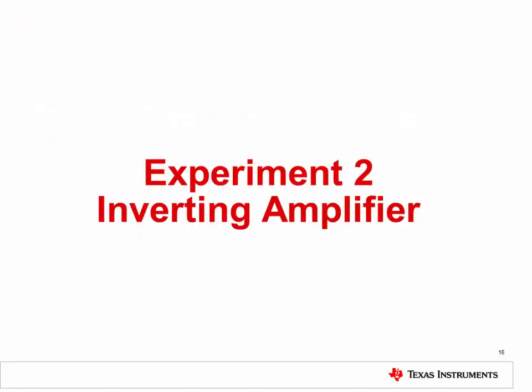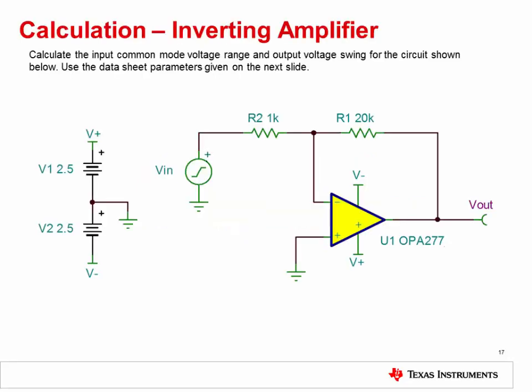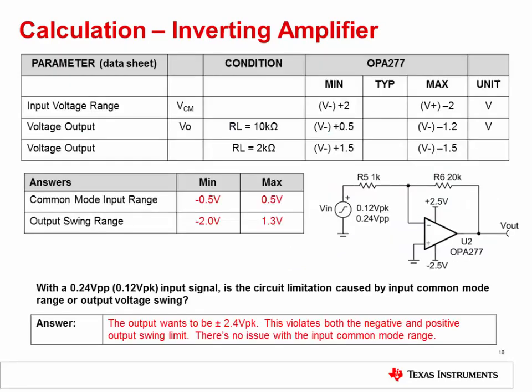In Experiment 2, we'll determine the effects of input and output limitations in an inverting amplifier circuit with gain. First, calculate the input common mode voltage range and output voltage swing for this inverting amplifier circuit, again using the techniques and equations given in the input-output limitations lecture. This circuit uses the OPA277. You need to know the input voltage range and voltage output swing values for that device — those values are given here. Enter your answers in the table in the middle of the slide; the solutions are already provided. Also answer the question at the bottom of the slide — again, the solution is already provided.